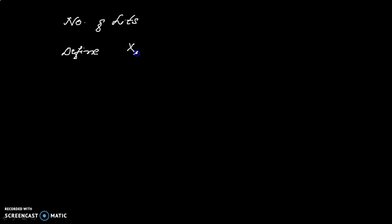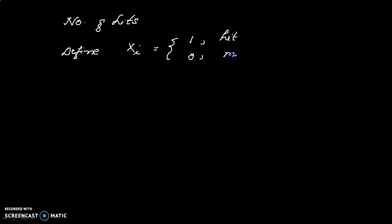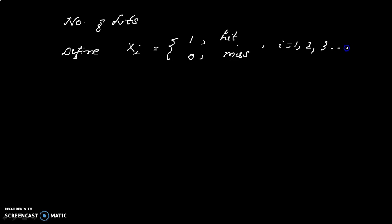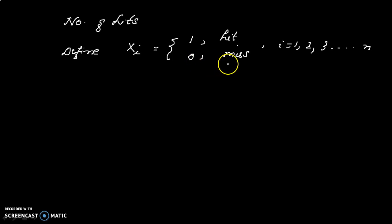Define a random variable Xi. Xi takes the value 1 if it is a hit, and takes the value 0 if it is a miss, for i = 1, 2, 3, ... up to n. So we define a set of n = 1000 random variables.